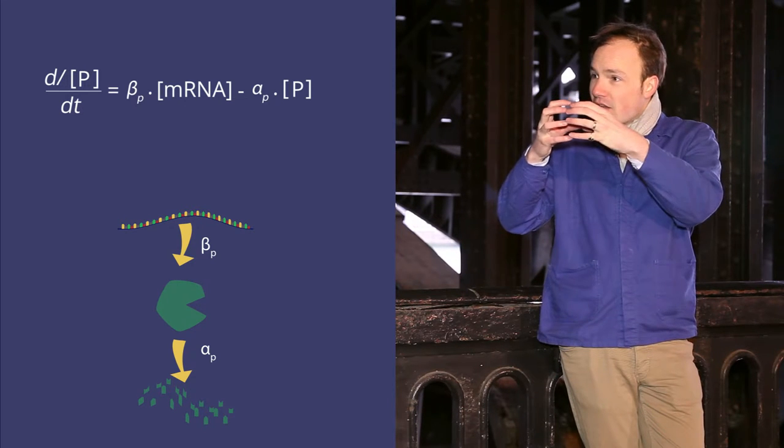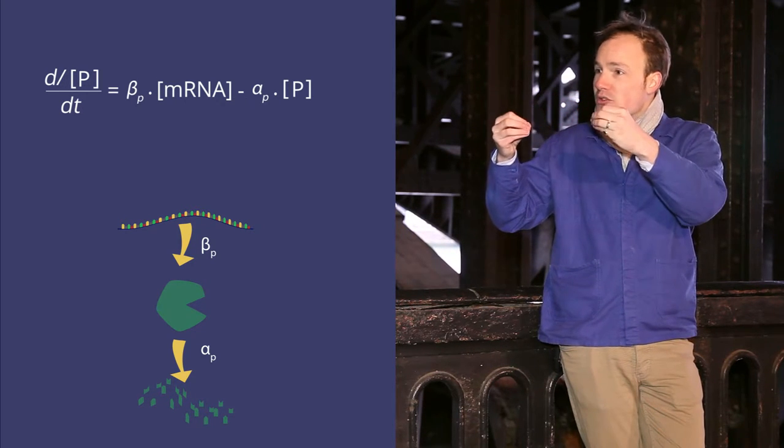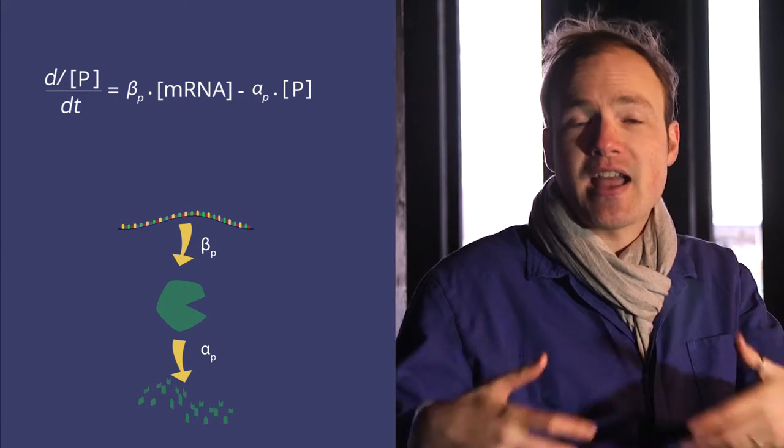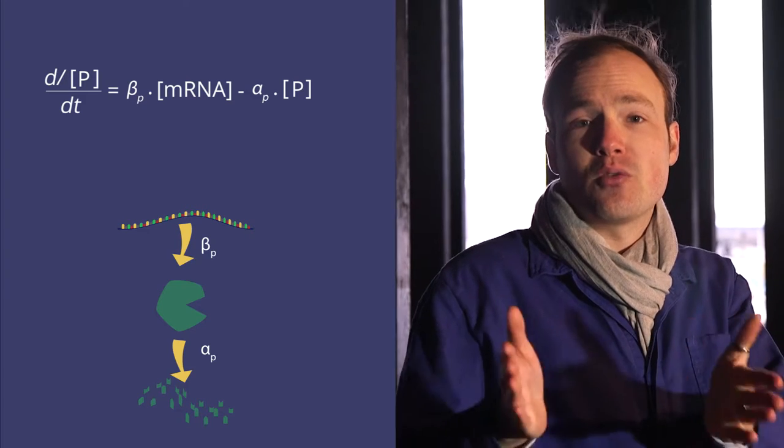So you can imagine that when a cell divides in two, we don't lose a specific number of proteins. We lose half, half of the proteins, half of whatever protein concentration there was before.